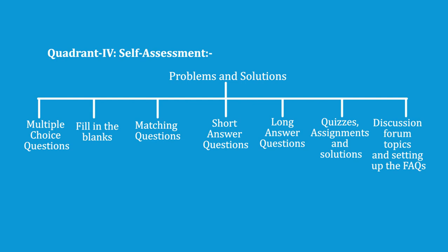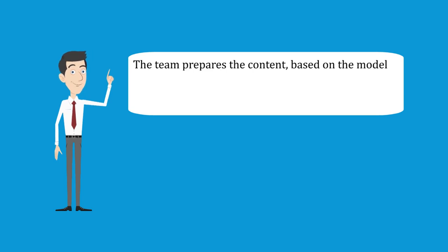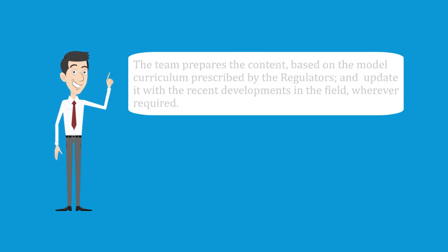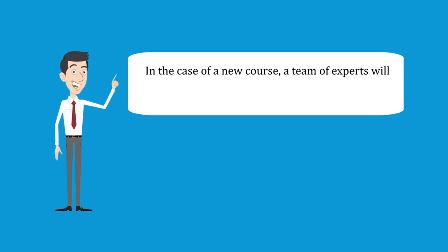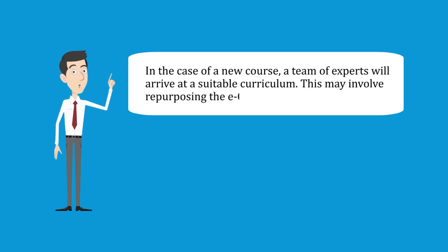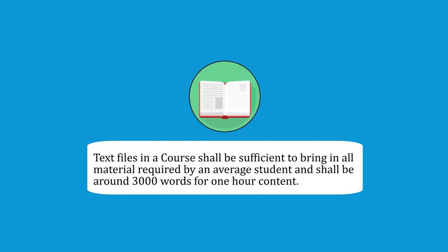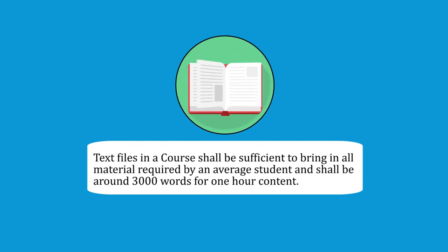In this module, we are going to focus on design and development of e-content for an online course. The team prepares content based on the model curriculum prescribed by the regulators and updates it with recent developments in the field whenever required. In the case of a new course, a team of experts will arrive at a suitable curriculum. This may involve repurposing e-content created elsewhere. Text files in a course shall be sufficient to bring in all material required by an average student and shall be around 3000 words for one-hour content. We will start with defining OERs and open licenses followed by guidelines for course adoption and adaptation.